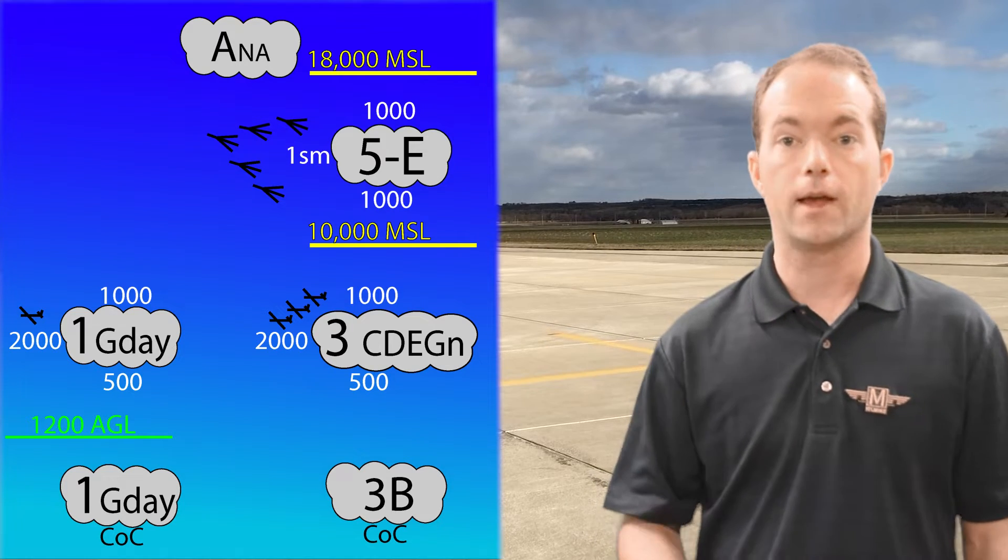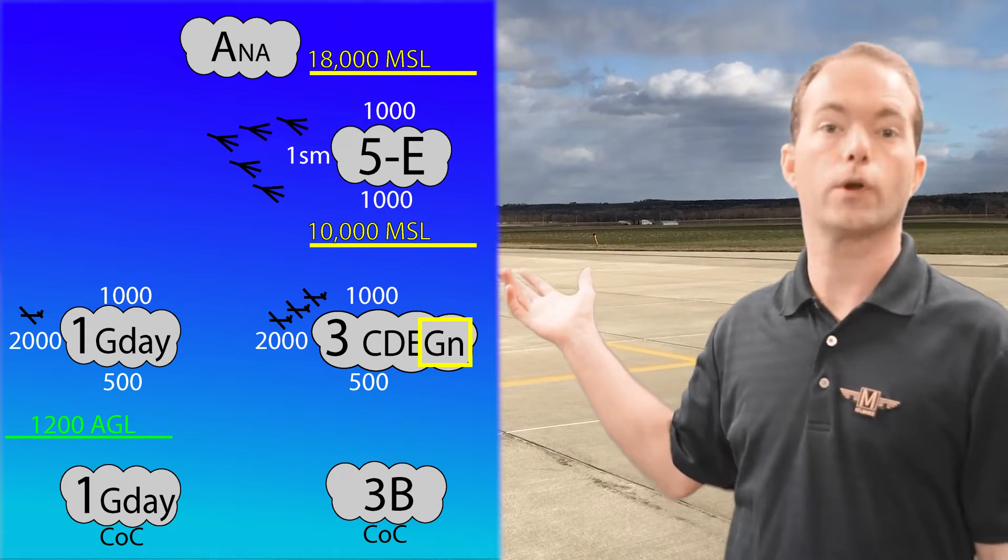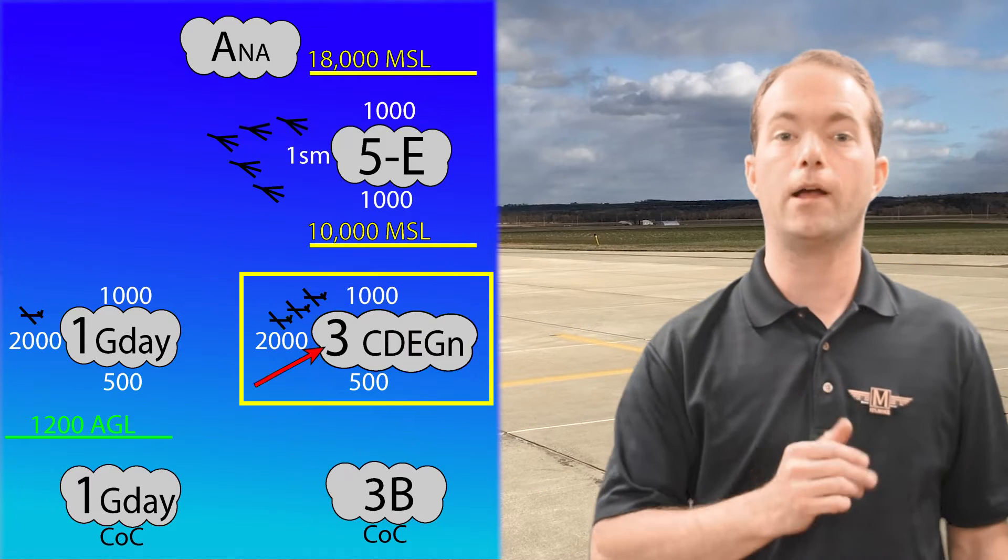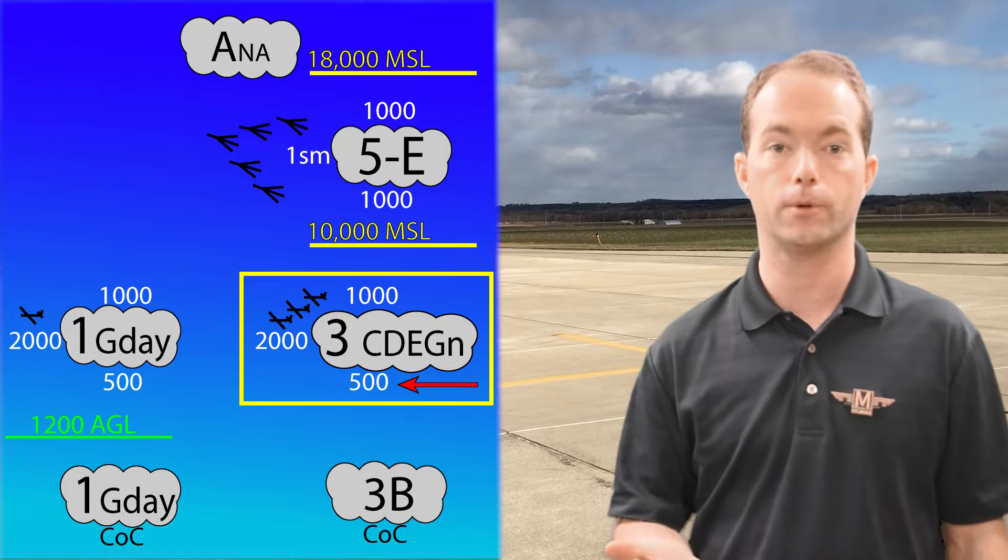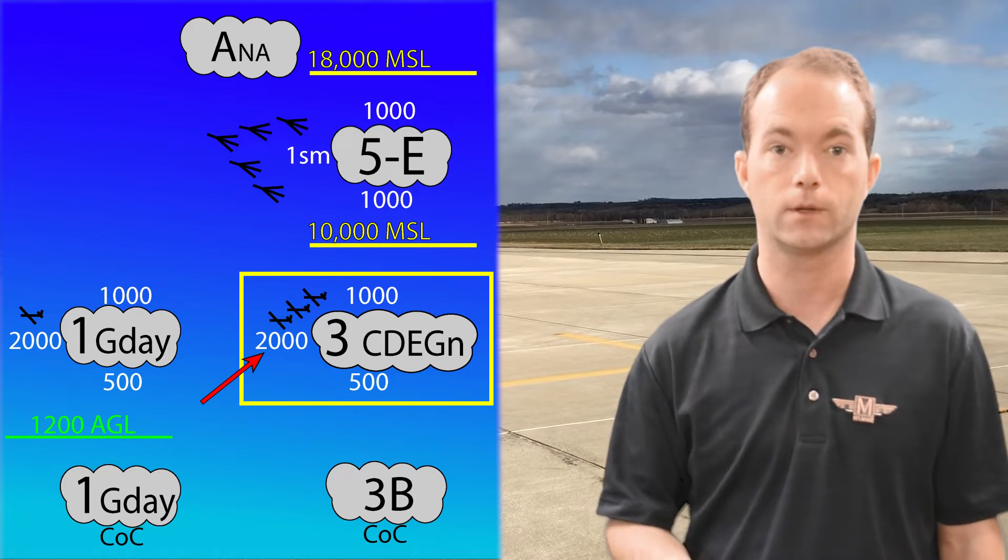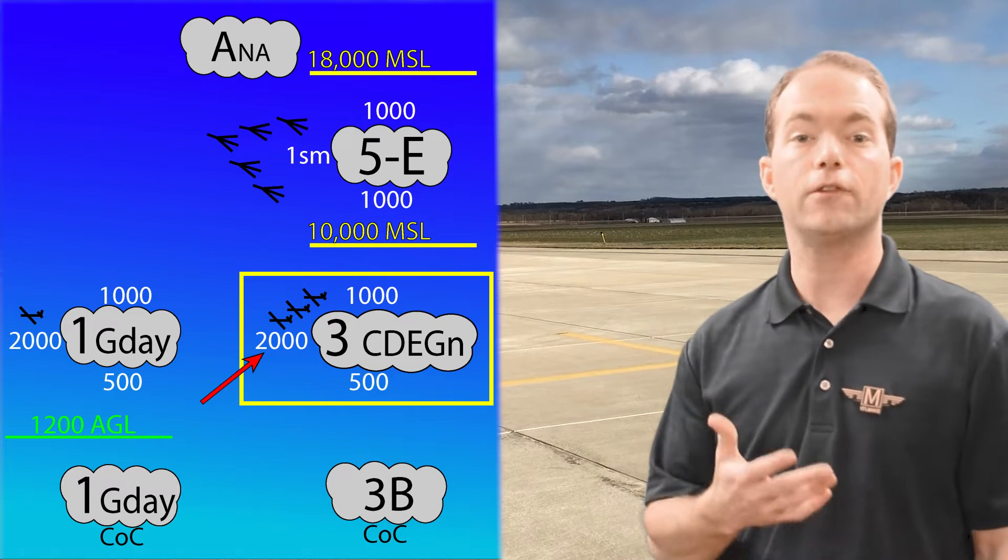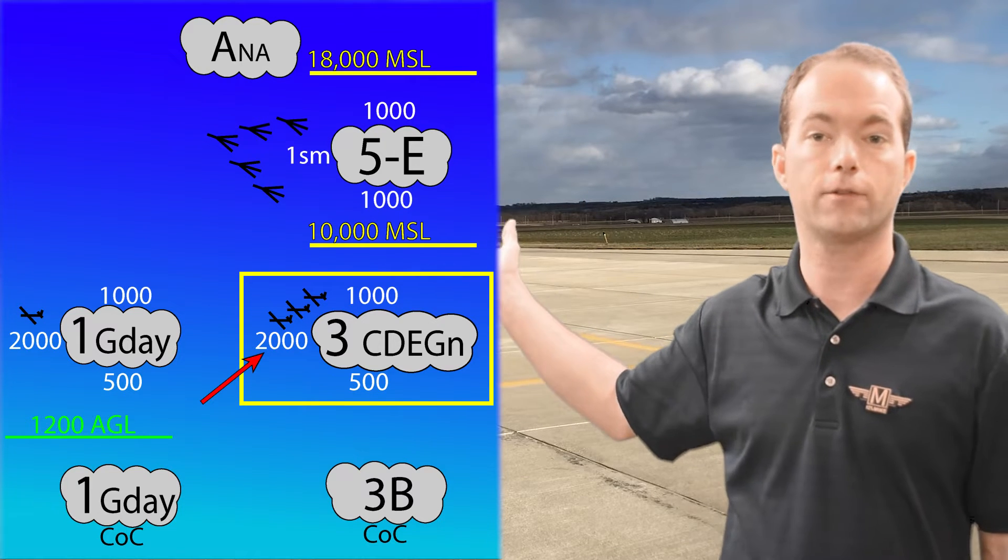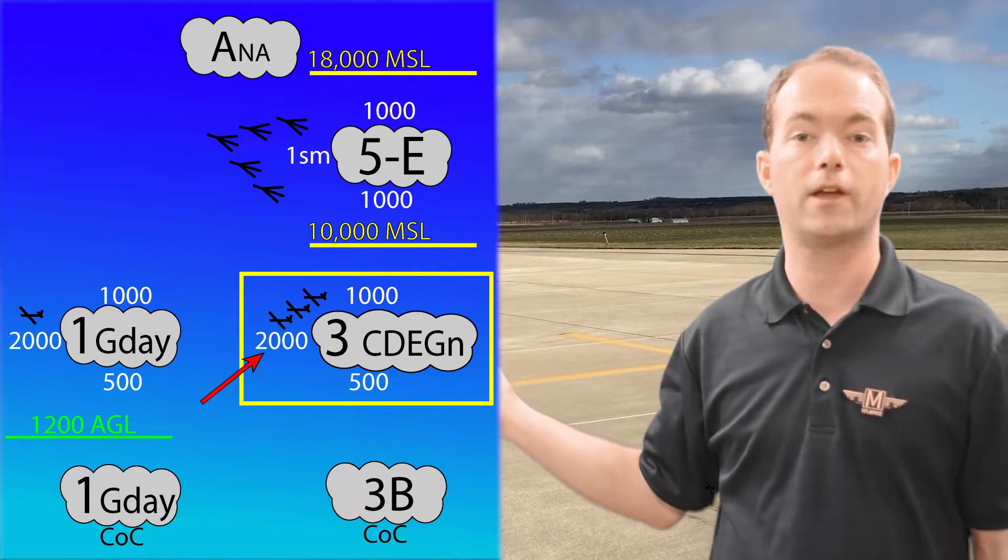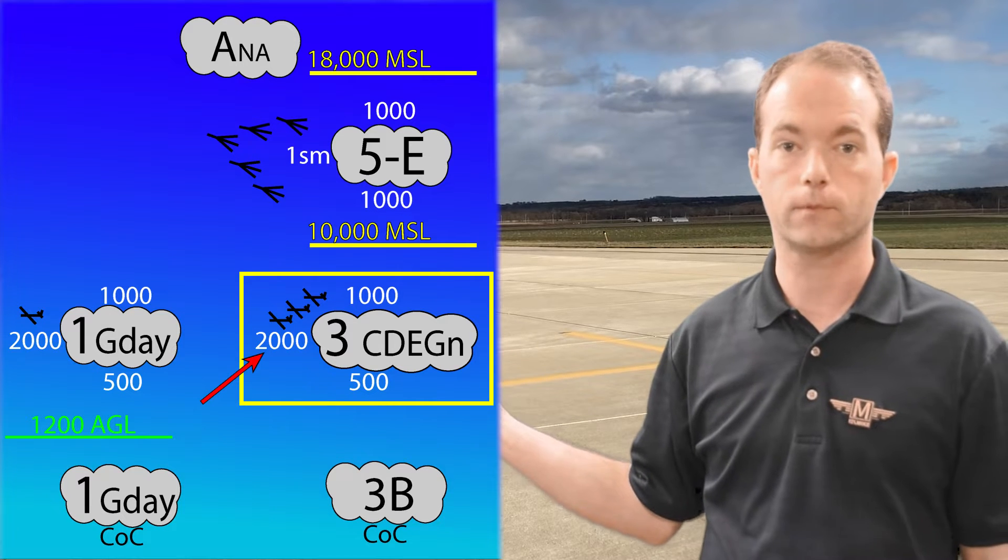For instance, class G at night, regardless of altitude, is 3 miles visibility and you have to maintain cloud clearances 1,000 above, 500 below and 2,000 horizontal. Now, you can see that these are actually the same as your class D and E below 10,000 feet. And so they're all grouped together into one set of rules, C as well.